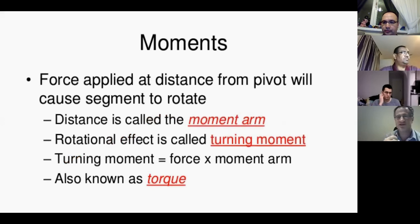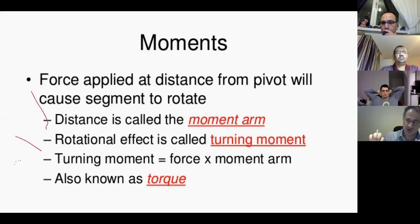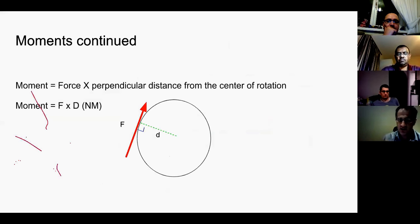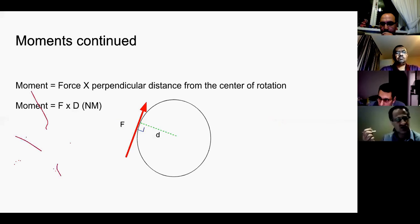The final concept we need is moments. A moment is a force applied at a distance from the pivot which causes rotational movement. That distance is called the moment arm — the distance between the force and the center of rotation. Moments cause a rotational effect called the turning moment, which equals force multiplied by the moment arm — also known as torque. For example, using a larger-handled screwdriver increases the distance of your force from the center of rotation, making it easier to turn.